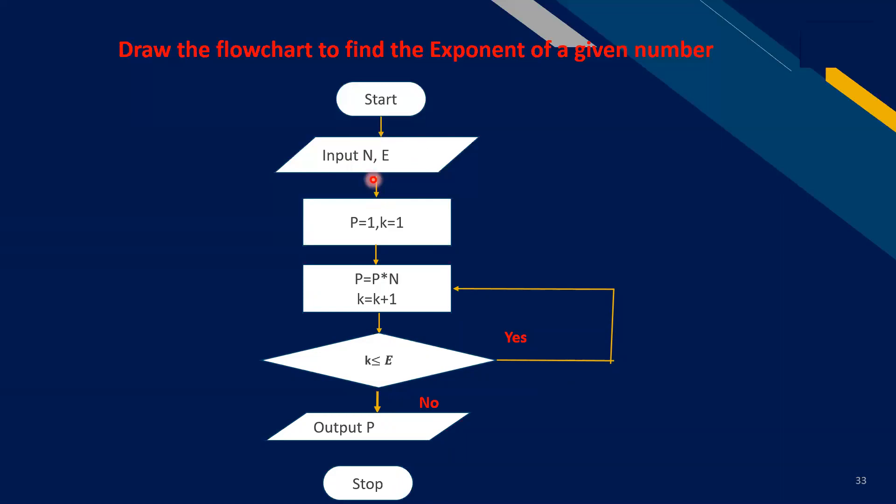Suppose the value of n is 5 and e is 2. Here p equals 1 and k equals 1. P is the number where we put the final value, so 1 multiply by 5, then increment 1 plus 1 equals 2. It will check k is less than 2 or equal to 2, yes, equal.